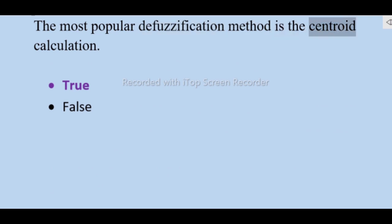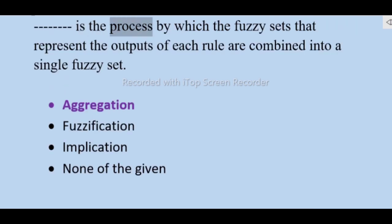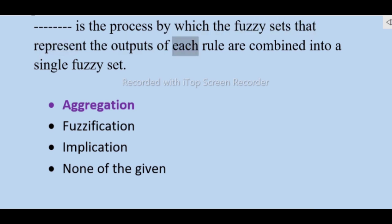The most popular defuzzification method is the centroid calculation — true or false. Aggregation is the process by which the fuzzy sets that represent the outputs of each rule are combined into a single fuzzy set.